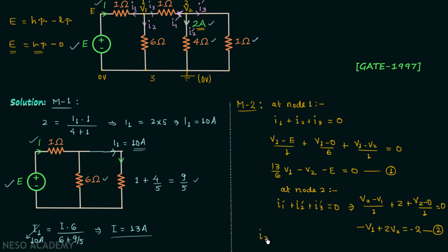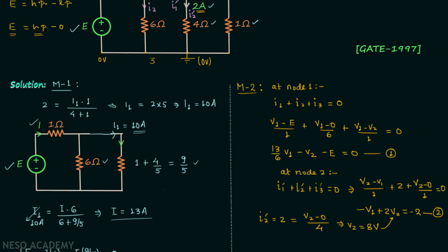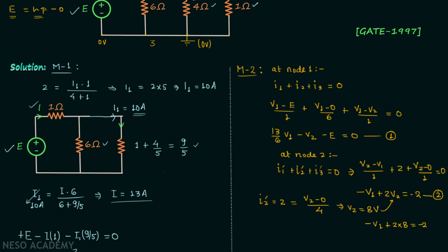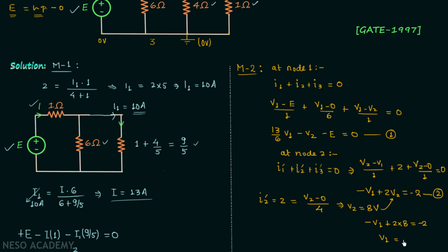We also observe that I2' equals V2 minus 0 divided by 4 equals 2 amperes, so V2 equals 8 volts. Substituting V2 equal to 8 into equation 2: minus V1 plus 16 equals minus 2, giving V1 equal to 18 volts.